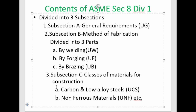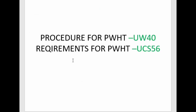The third subsection is Subsection C, which covers classes of materials for construction of pressure vessels. The first class is carbon and low alloy steels, denoted as UCS; the second is non-ferrous materials, denoted as UNF; and the third is high alloy steels, denoted as UHA. The requirements for post-weld heat treatment are given in UCS-56, and the procedure is given in UW-40.